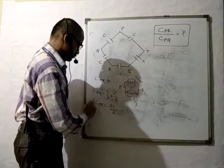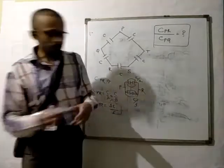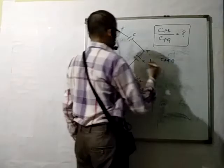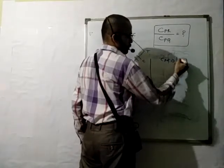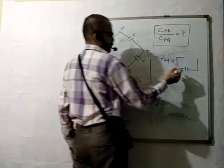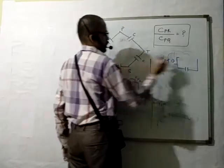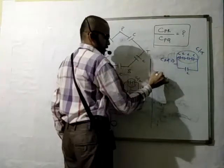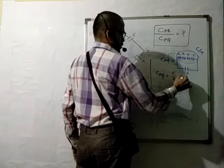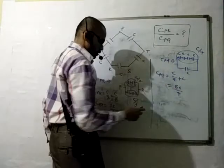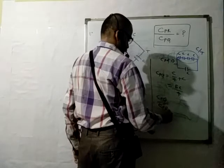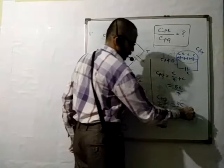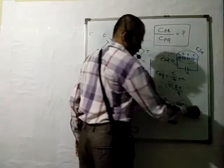Similarly, for C(PQ) — between P and Q — there are 4 capacitors on one side in series giving C/4, and one capacitor below. So C(PQ) = C/4 + C = 5C/4. Now the ratio C(PQ) / C(PR) = (5C/4) / (5C/6) = (5C/4) × (6/5C) = 6/4 = 3/2.